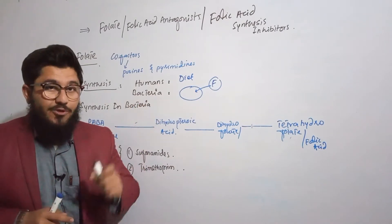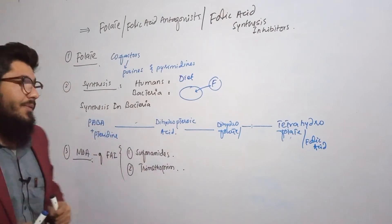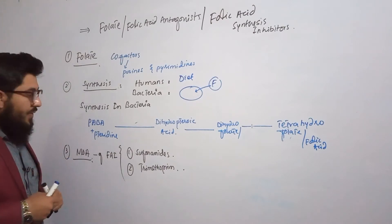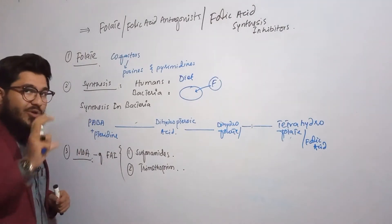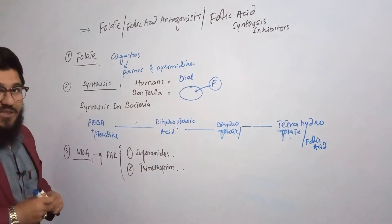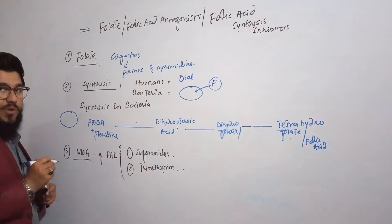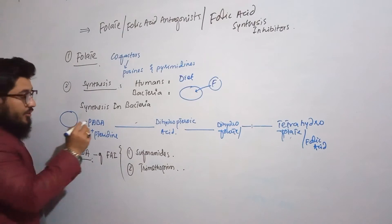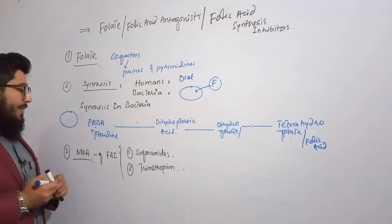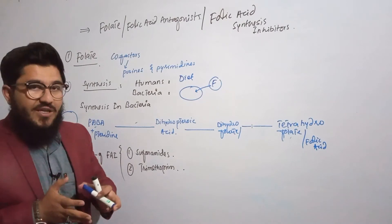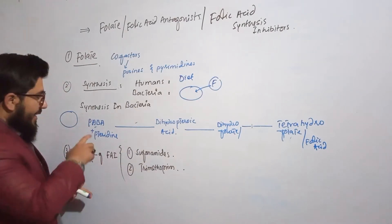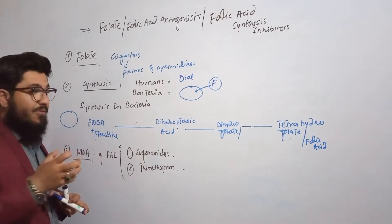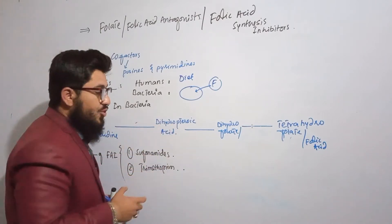The bacteria are responsible to synthesize folic acid internally. Inside the bacterium, there are two biomolecules: para-amino benzoic acid (PABA) and pteridine. These are the very initial biomolecules. PABA will react with pteridine, and after they react by the help of an enzyme, they will synthesize dihydropteroic acid.